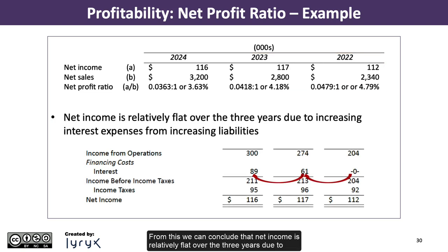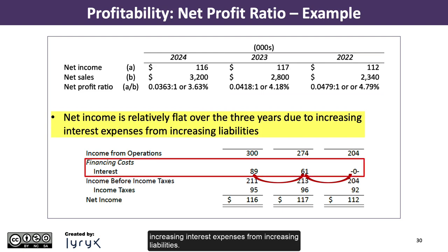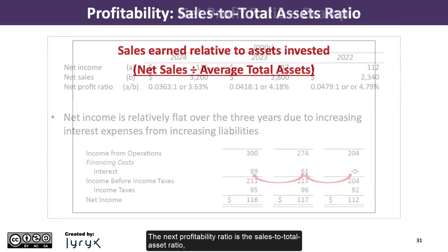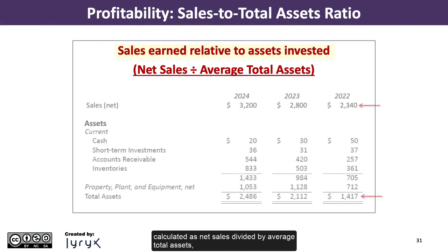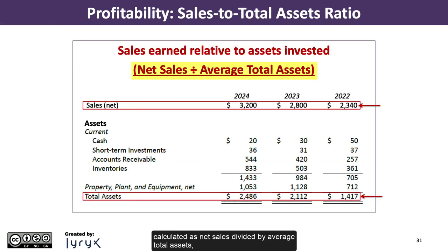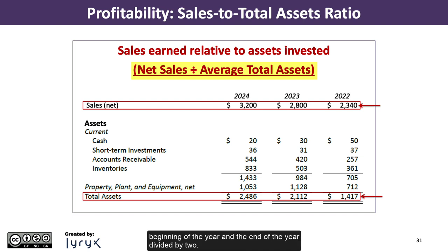From this, we can conclude that net income is relatively flat over the three years due to increasing interest expenses from increasing liabilities. The next profitability ratio is the sales to total asset ratio, which measures sales earned relative to assets invested and is calculated as net sales divided by average total assets, where average total assets is calculated as the sum of the assets at the beginning of the year and the end of the year divided by 2.